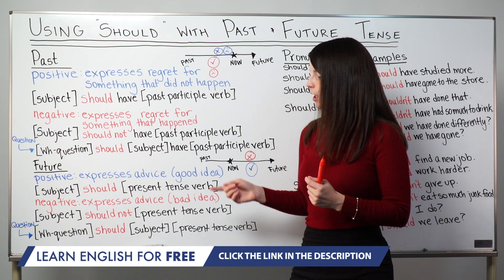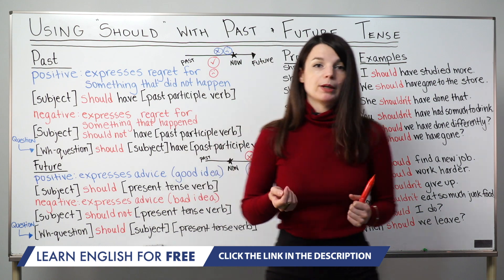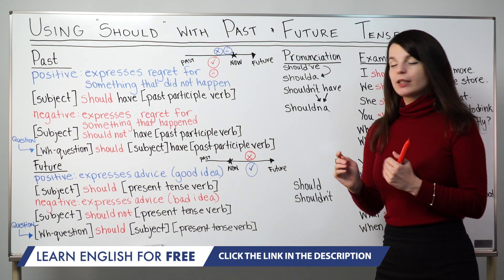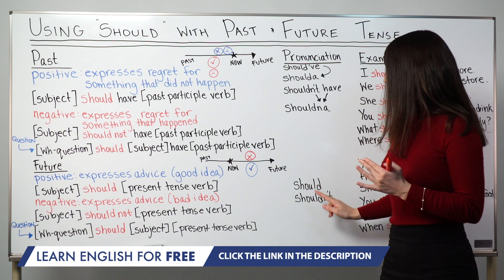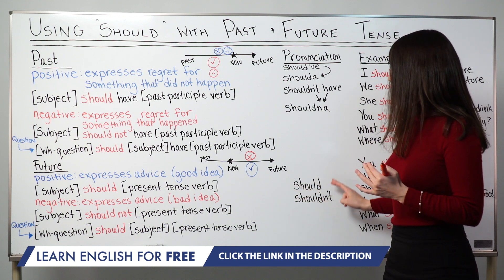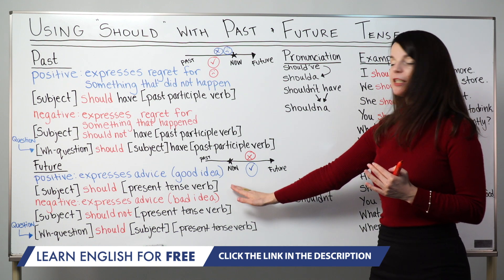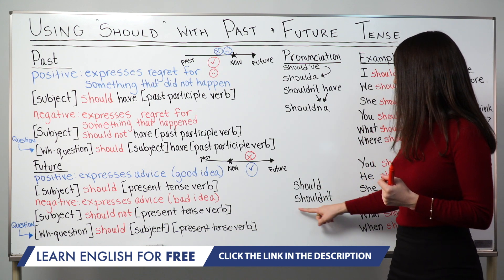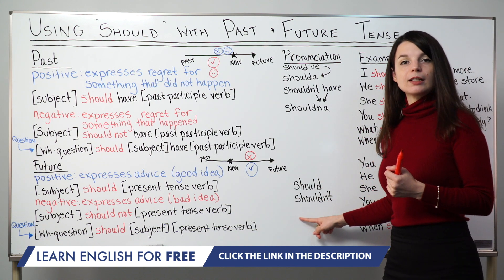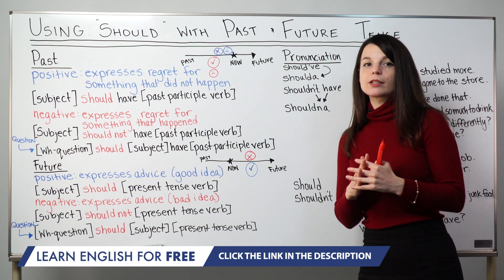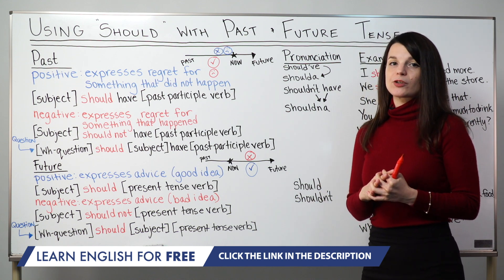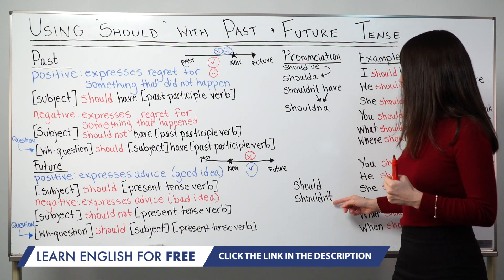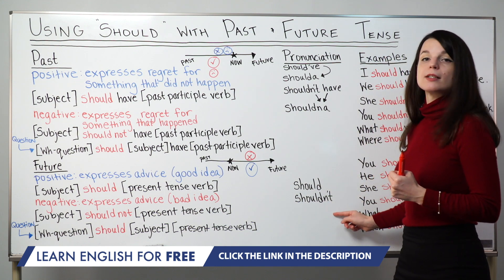A quick pronunciation note: for positive future statements, should doesn't really change much — just should. For the negative, though, definitely use the reduced shouldn't rather than should not. It sounds much more natural. So try to use that shouldn't sound in your speech.